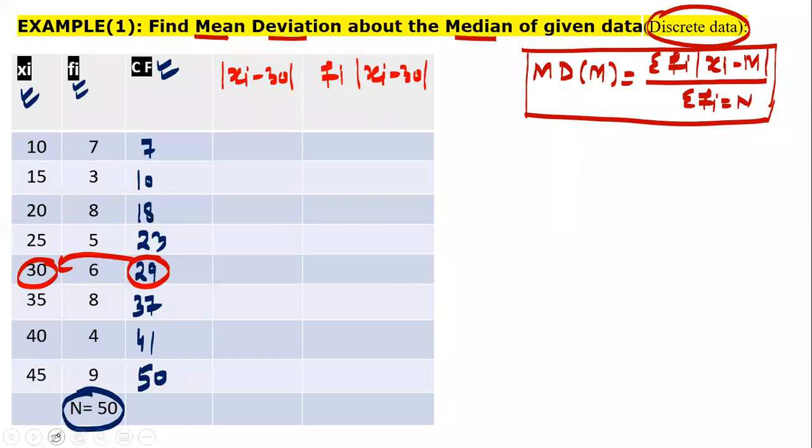Find out its value. Absolute value of Xi minus 30. 10 minus 30. And its absolute value means only positive. 15 minus 30. 20 minus 30. 25 minus 30. 30 minus 30. 35 minus 30. And 40 minus 30. And this is 15.